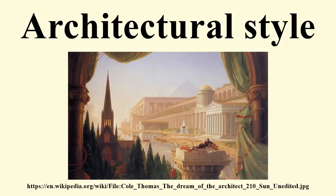An architectural style is characterized by the features that make a building or other structure notable or historically identifiable. A style may include such elements as form, method of construction, building materials, and regional character.